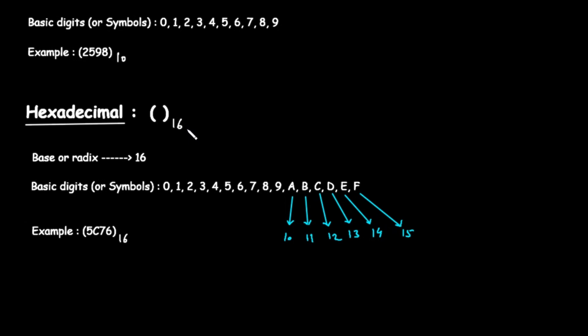This means the hexadecimal system needs 16 unique symbols. Now, we have a small problem. We only have 10 numerical digits, 0 through 9. How do we get 16 symbols? We borrow from the alphabet.